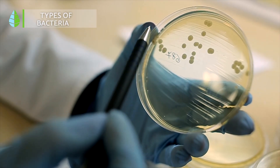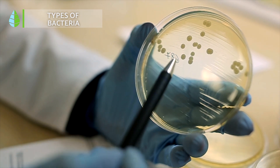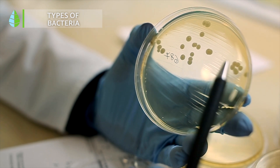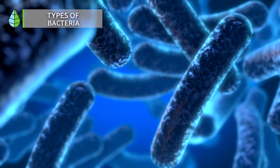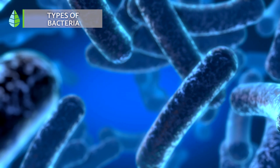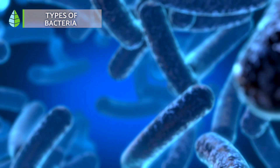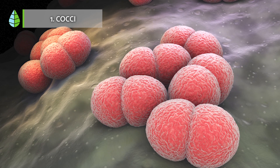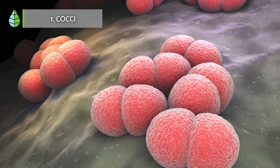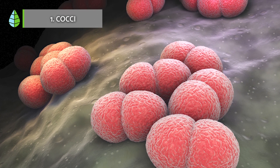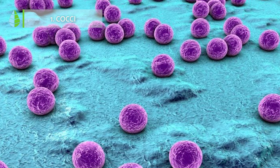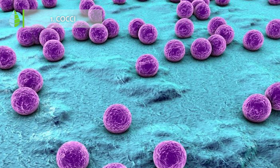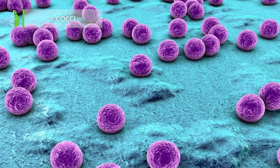Types of bacteria: To understand the different types of bacteria, we use classifications developed through extensive study. Currently, we can classify bacteria into three main types based on their cell wall structure and shape. Cocci have a round or oval shape. When these bacterial cells divide, they can stay attached to each other forming groups, and they can create different clusters based on how they divide.